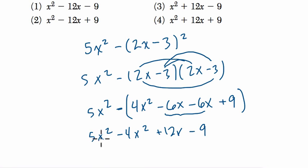So here I've got 5x squared minus 4x squared. That's x squared plus 12x and then minus 9. So this is choice 3. All right, I hope this helped.